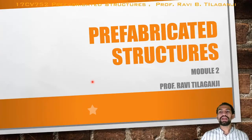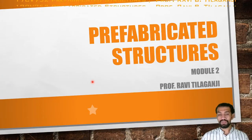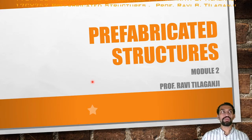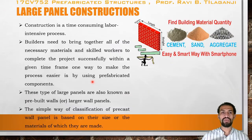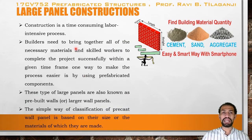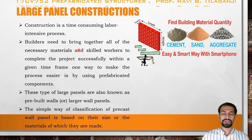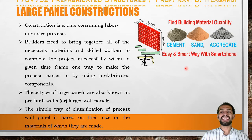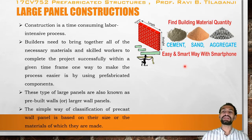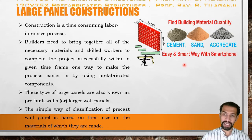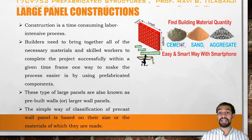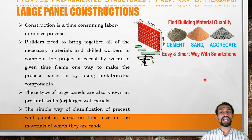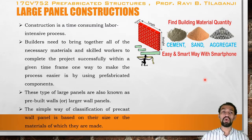Welcome to Prefabricated Structures Module 2. This module is related to prefabricated components, specifically large panel constructions. The materials required for large panel constructions are the same as conventional construction materials — that is, cement, sand, and aggregate. We can also understand this in an easy and smart way using smartphones.